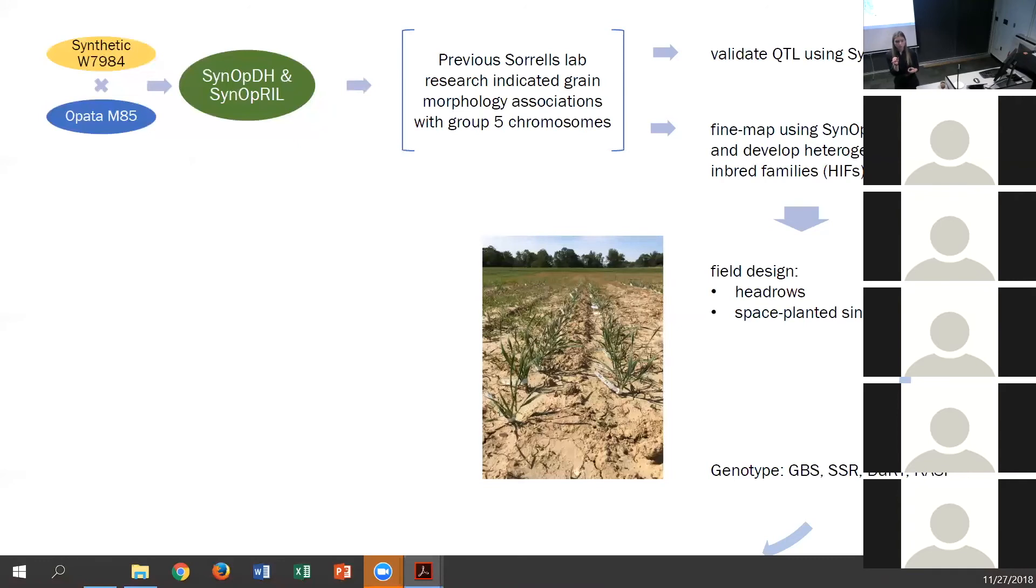The genotyping, this is a largely, or the synthetic-Opata population is widely used in the wheat breeding community, so we have access to a lot of public resources for genotyping. I specifically have been developing CAST markers, which are a fluorescent SNP marker for targeting more specific regions associated with our QTL.